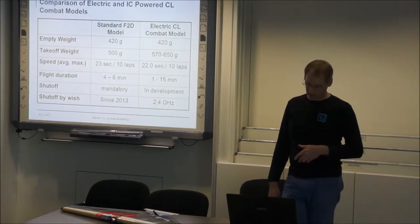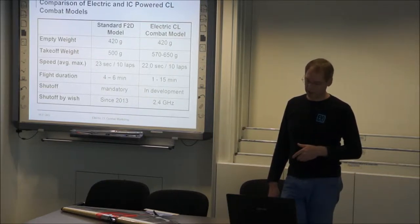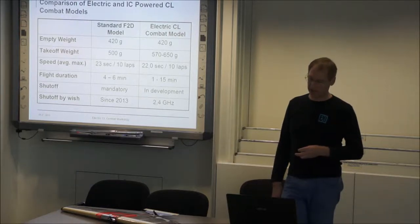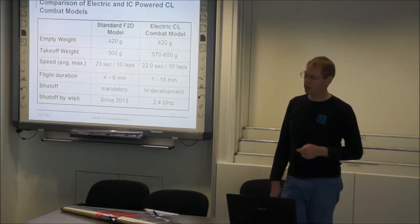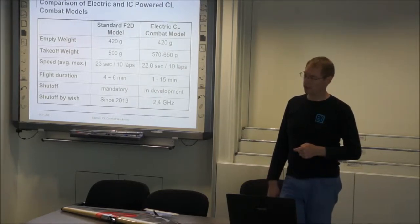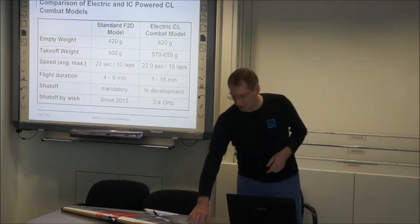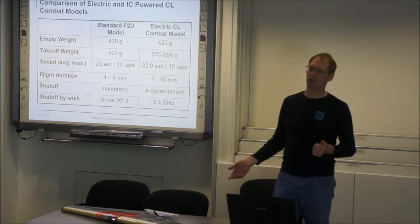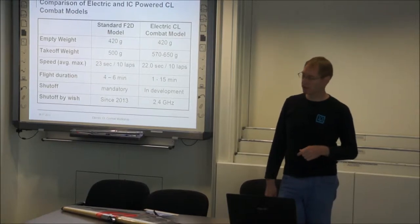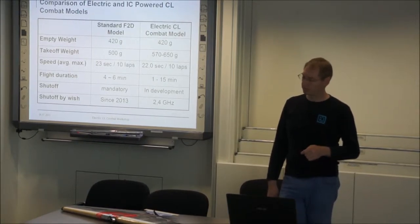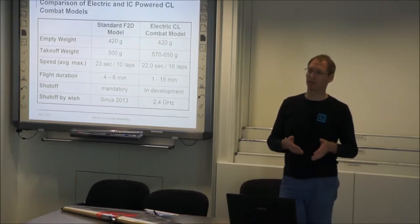The shut off is in F2D it's in the rules. An electric control line it's in development. I think the best solution for electric combat would be throttle control and engine control over the wires. And if the wires break there is no control. We can set up the failsafe so the engine will shut down immediately.